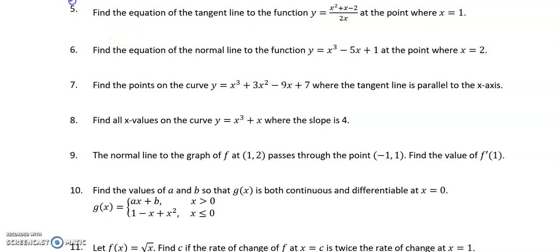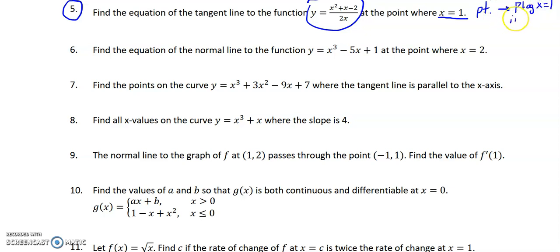Let's look at number 5. Find the equation of the tangent line to the function. This function is of a form similar to what we saw in letter i, where we changed the form before doing the problem. We're trying to find the equation of the tangent line at the point where x equals 1. To write the equation for a line, we need the slope and a point. To get the slope, I'm going to take the derivative and then plug in. To get the point, I'm going to plug x equals 1 into the original equation.